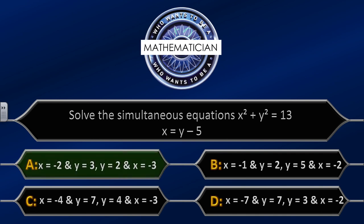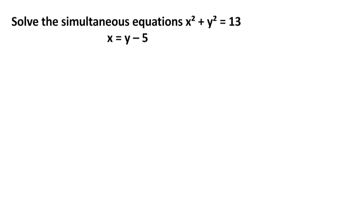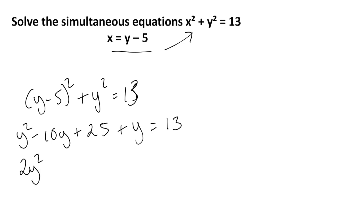The correct answer is A. That's the end of the quiz — I hope you've done well. To solve the simultaneous equations x² plus y² equals 13 and x equals y minus 5, substitute the second equation into the first: (y minus 5)² plus y² equals 13. Expanding: y² minus 10y plus 25 plus y² equals 13. Collecting like terms: 2y² minus 10y plus 12 equals 0. Divide everything by 2.